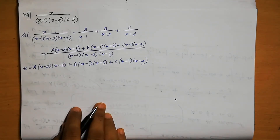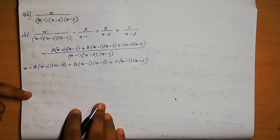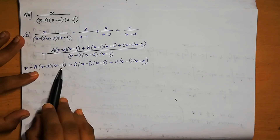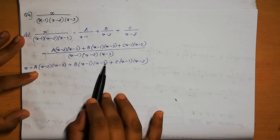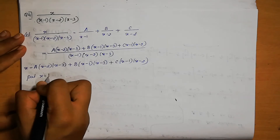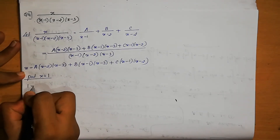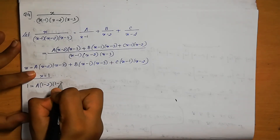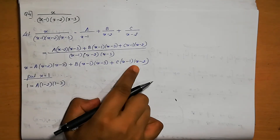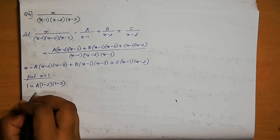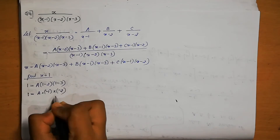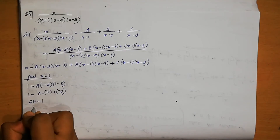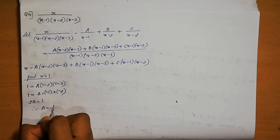Find A. Put x equals 1: 1 equals A(1 minus 2)(1 minus 3) plus 0 plus 0. So, 1 equals A(minus 1)(minus 2) equals 2A. Therefore, A equals 1 by 2.